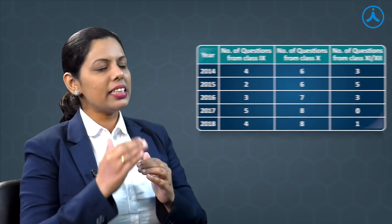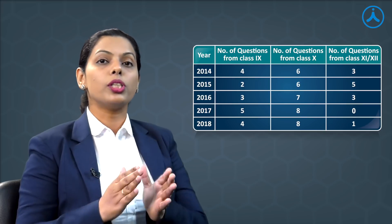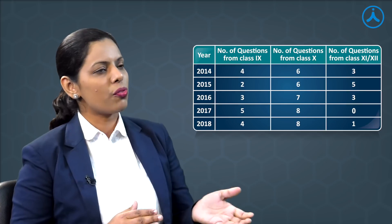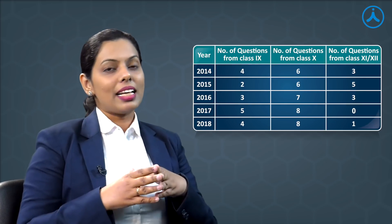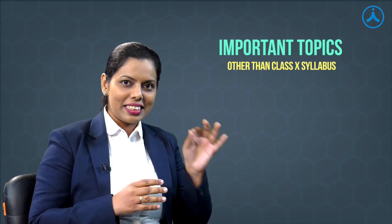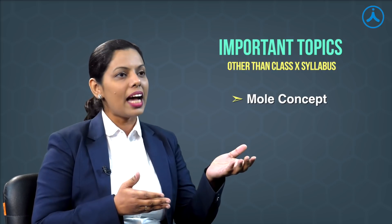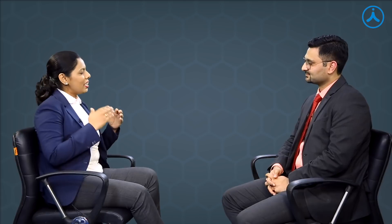Which chapters should students focus on to score maximum marks in chemistry? To identify the important chapters, we have to look at the analysis of previous year papers. If I analyze the previous 5-year question papers, I suggest students to focus more on class 10th chemistry, because 7 to 8 questions are asked from class 10th chemistry only. For class 9th, there are 3 to 5 questions. Specifically, I suggest students focus on mole concept — the chapter is atoms and molecules — along with structure of atoms.